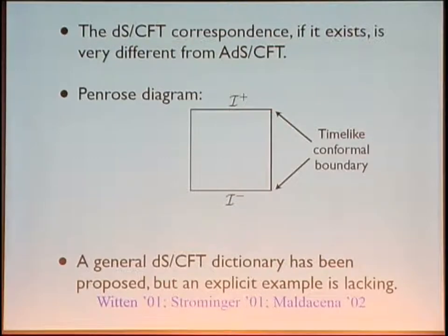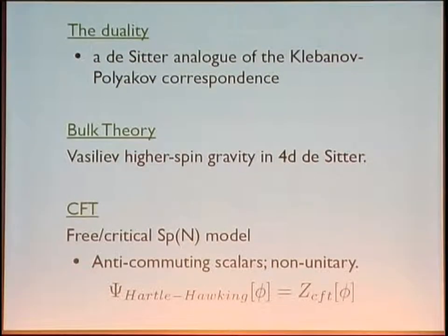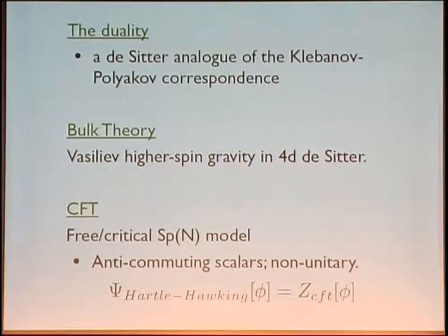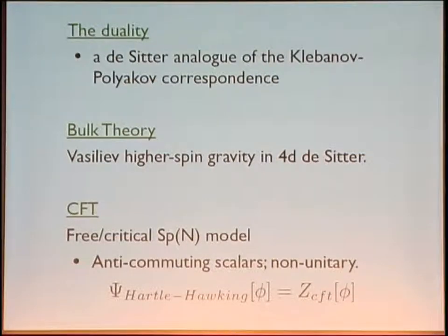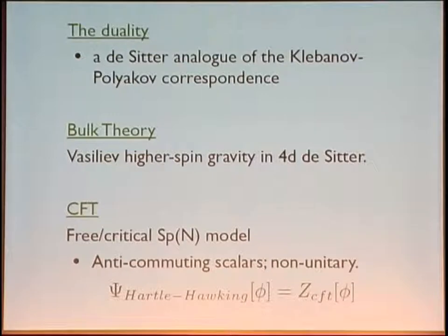Our claim is that an explicit example can be constructed in higher spin gravity — a dS-CFT analog of the Klebanov-Polyakov correspondence relating the O(N) model to higher spin gravity in AdS. In the dS-CFT case, the bulk theory is the Vasiliev theory of higher spin gravity in four-dimensional de Sitter space with an infinite tower of massless higher spin fields. The dual CFT is a free field model called the Sp(N) model — a strange CFT with anti-commuting scalar fields that is therefore non-unitary. However, Euclidean CFTs don't need to be unitary, so this is not a problem.